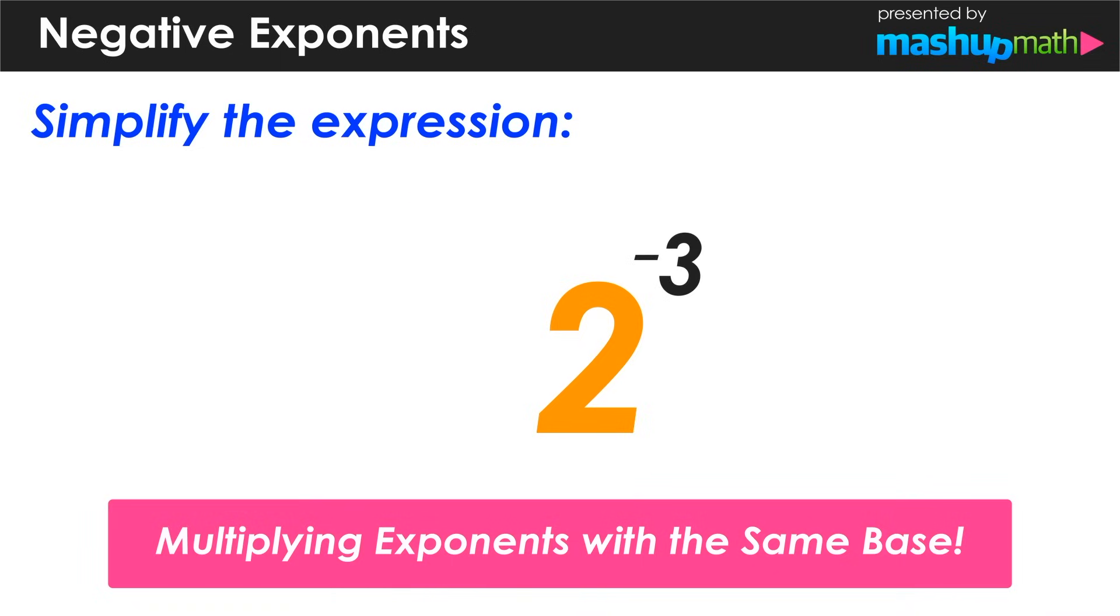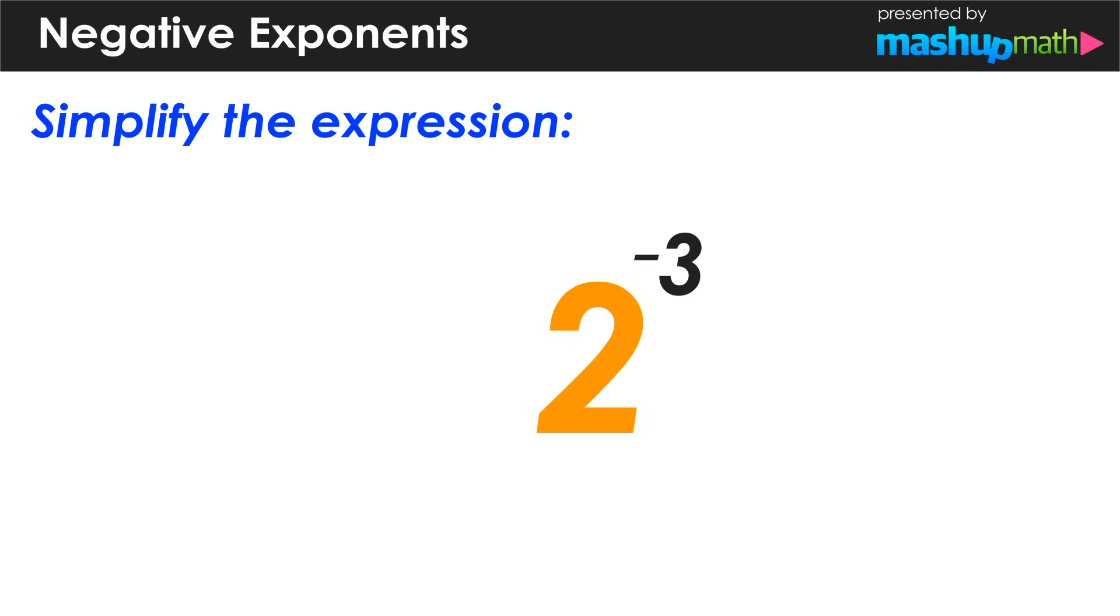And we know that since our exponent is negative, we can rewrite this as 1 over 2 to the third power. Again, we remove the negative sign.